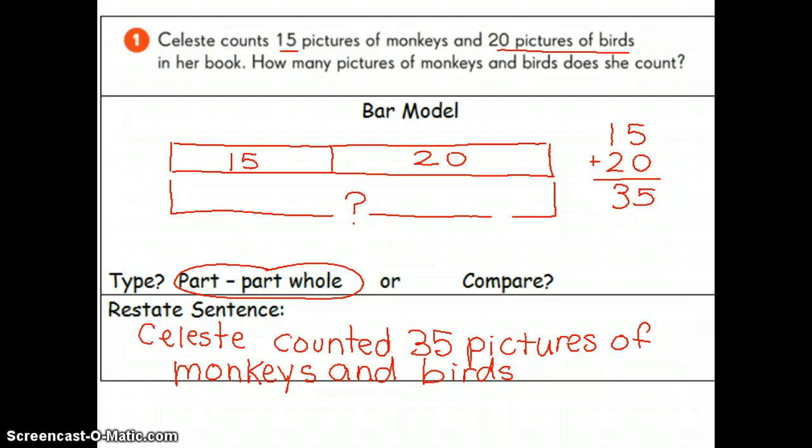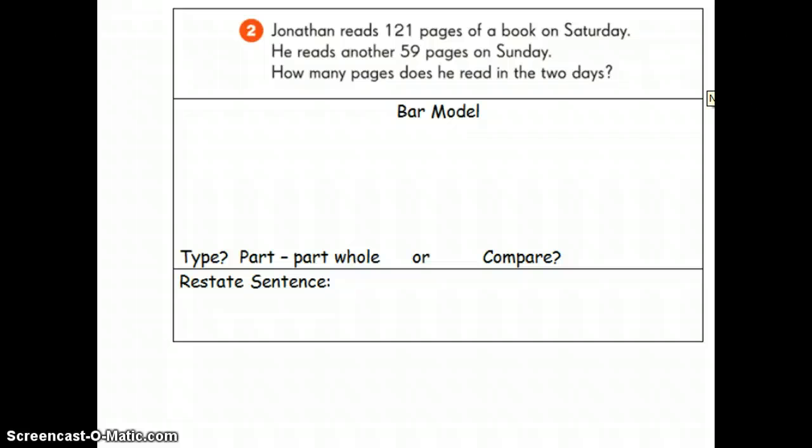The next problem that we have here as an example is Jonathan reads 121 pages of a book on Saturday. He reads another 59 pages on Sunday. How many pages does he read in the two days? First thing I'm going to do is I'm going to ask myself is this a part-part-whole or is this a compare problem. This is, once again, a part-part-whole problem.